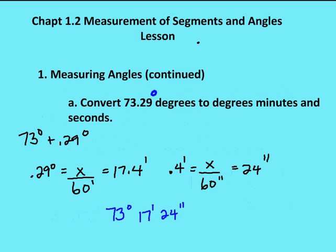There are three problems we're going to work on. The first is to convert degrees only to degrees, minutes, and seconds. The next is to convert degrees, minutes, and seconds to degrees only. And the third part is to subtract one from the other.